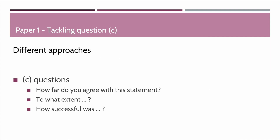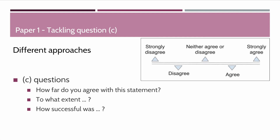C questions, as they appear in Paper One, often come in three forms. The first is: how far do you agree with this statement? There are five different degrees of agreement. Five is useful because you have a clear center which is neither agree nor disagree, then disagree and strongly disagree on one end, and agree and strongly agree on the positive side. If you've ever completed a survey for a company, it is usually this model which is used.